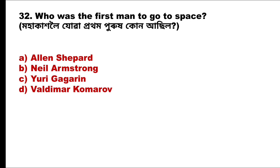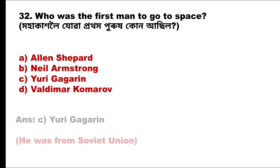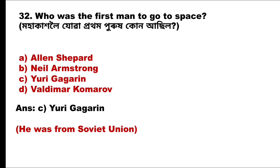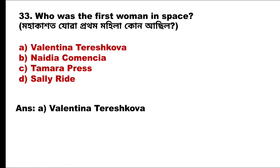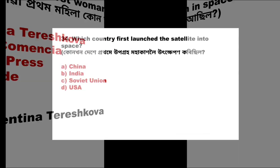Question 32: Who was the first man to go to space? The answer is option C, Yuri Gagarin, from the Soviet Union. Question 33: Who was the first woman in space? The answer is option A, Valentina Tereshkova.